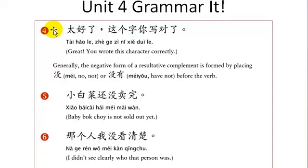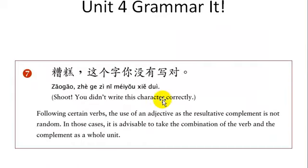The negative form of a resultative complement is formed by placing 没 or 没有 before the verb. 小白菜还没卖完 — the bok choy is not sold out yet. You can't say 还不买完. 那个人我没看清楚 — I didn't see that person clearly. 糟糕，这个字你没有写对 — you didn't write this character correctly.